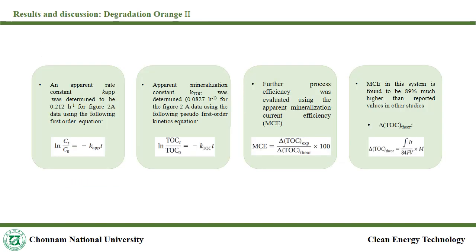For figure 2A, the apparent rate constant and apparent mineralization constant were calculated to be 0.121 per hour and 0.0827 per hour respectively, using the equation mentioned. Further, process efficiency was evaluated using the apparent mineralization current efficiency and it was found to be 89%, which is quite higher than other studies, owing to better utilization of electrical energy and suppression of parasitic reaction of hydroxyl radicals and ferrous ions.